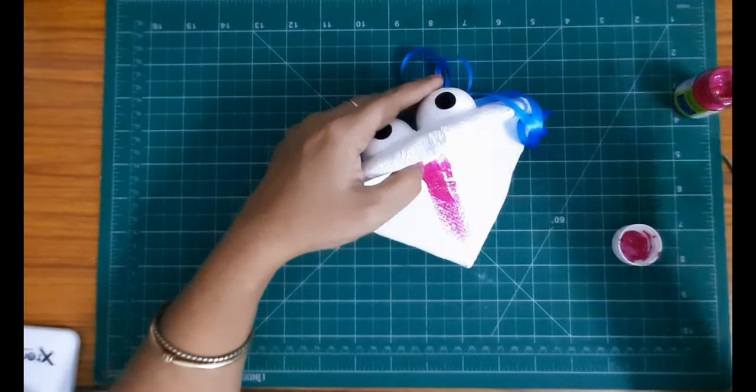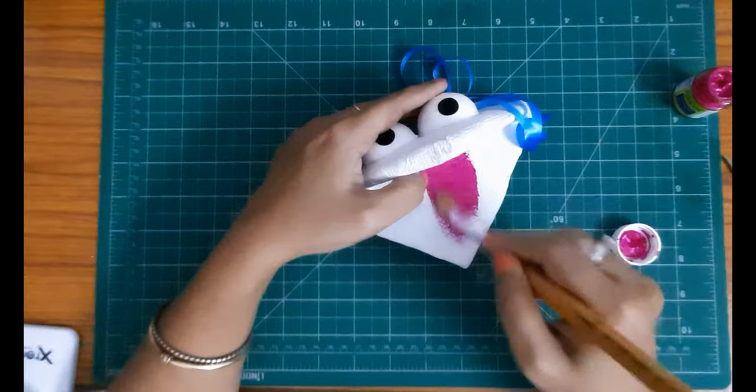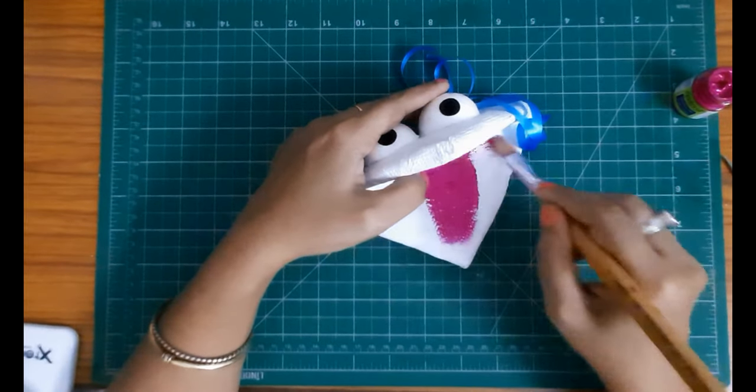So I start painting the mouth. Don't put a thick coat, otherwise it will take a lot of time to dry. Just put a thin single coat here.